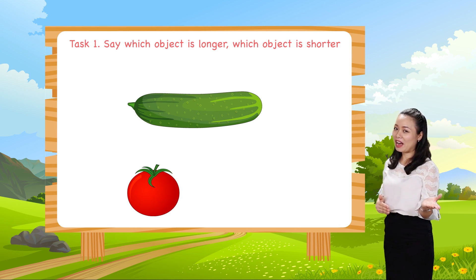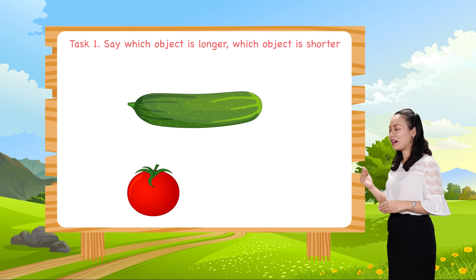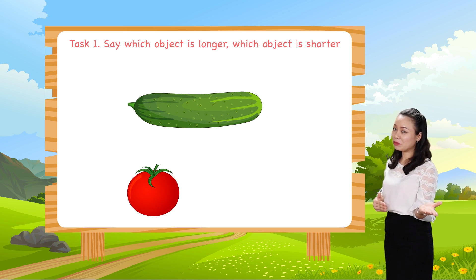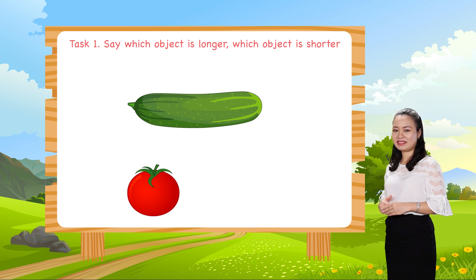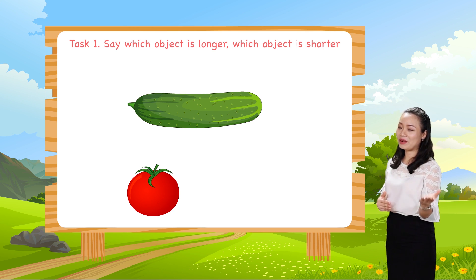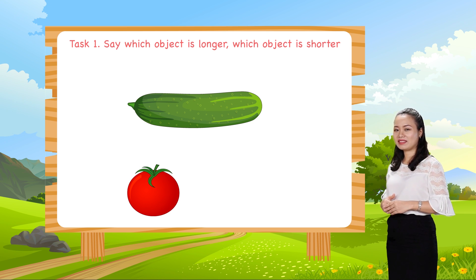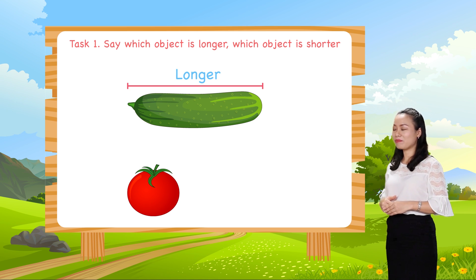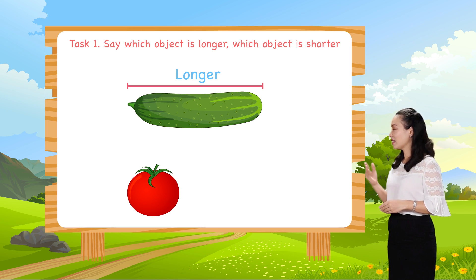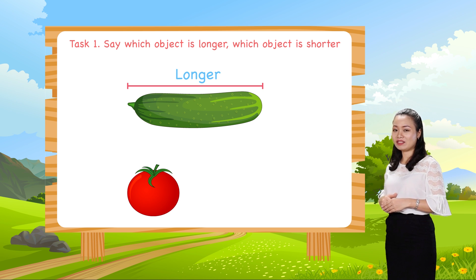We have a cucumber and a tomato. Which one is longer? Which one is shorter? Alright! So the cucumber is longer than the tomato, or the tomato is shorter than the cucumber.